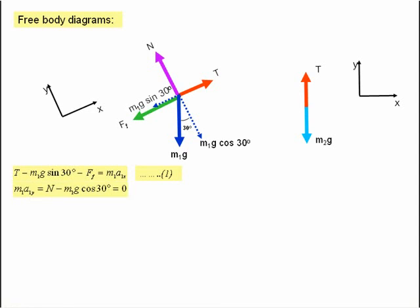Now we write down the equation of motion in the y-direction. In the y-direction we have the mass times the acceleration is equal to the resultant force, which is N minus M1g cos 30 degrees. And because there is no acceleration in the y-direction, we can put that equal to zero. Transposing that equation gives us that N is equal to M1g cos 30.